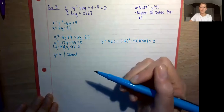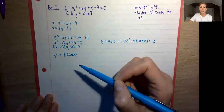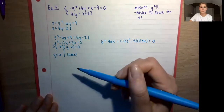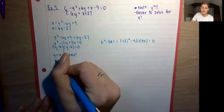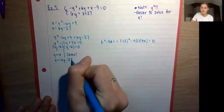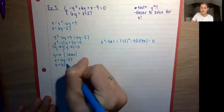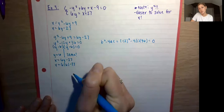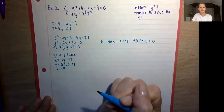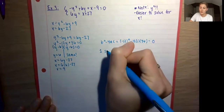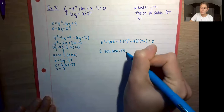Now back-substitute to get x. We know y = 6, and using x = 6y − 27: x = 6(6) − 27 = 36 − 27 = 9. So we have one solution at (9, 6). We've now seen all three cases: two solutions, one solution, and zero solutions.